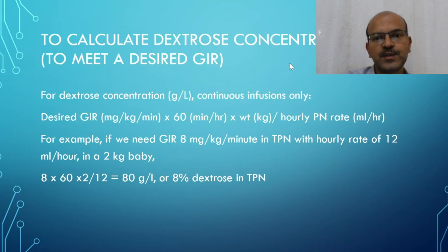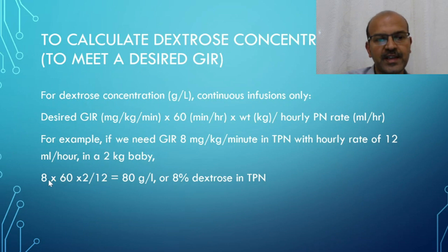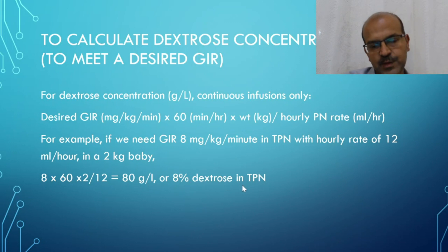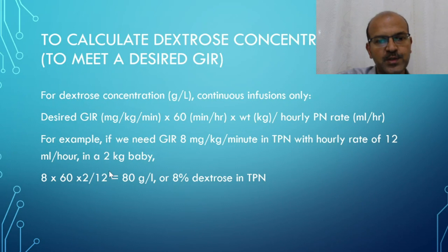We can also calculate the dextrose concentration needed to achieve a target GIR in TPN using: desired GIR × 60 × weight ÷ hourly PN rate. For example, if GIR of 8 mg/kg/min is needed with a rate of 12 ml/hour in a 2 kg baby: 8 × 60 × 2 ÷ 12 = 80 g/L = 8% dextrose. GIR calculators are also available on many websites and apps using these same variables.